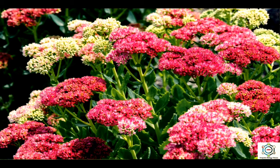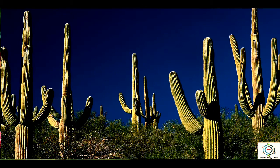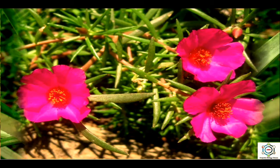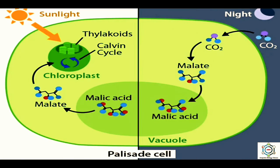Similar metabolism has been found in plants belonging to Cactus (Opuntia), Orchid, Portulaca, and Pineapple families. All these plants are referred to as CAM plants. The most characteristic feature is that their stomata remain open at night in the dark but closed during the day in light. Thus CAM is a kind of adaptation in succulents to carry out photosynthesis without much loss of water.